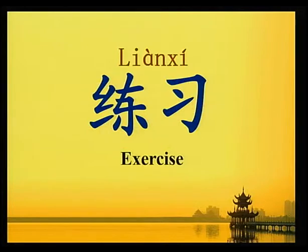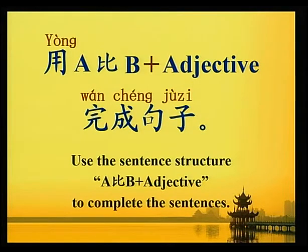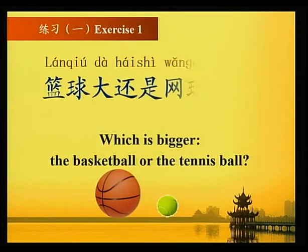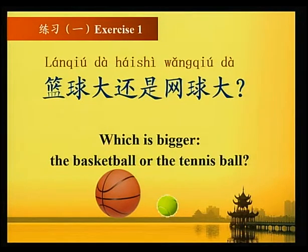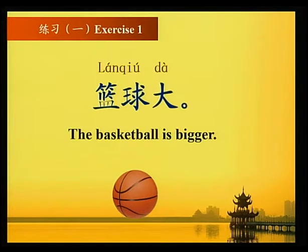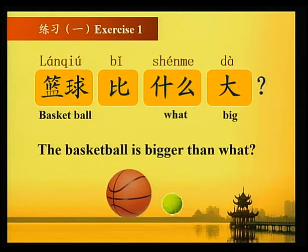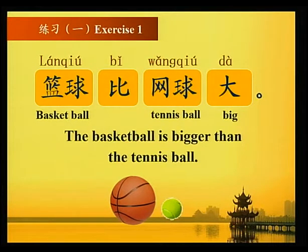练习 Exercise. 用 A比B Plus Adjective 完成句子 — Use the sentence structure A比B Plus Adjective to complete the sentences. 练习一 Exercise one: 篮球大还是网球大？Which is bigger, the basketball or the tennis ball? 篮球大 — the basketball is bigger. 篮球比网球大 — the basketball is bigger than the tennis ball.